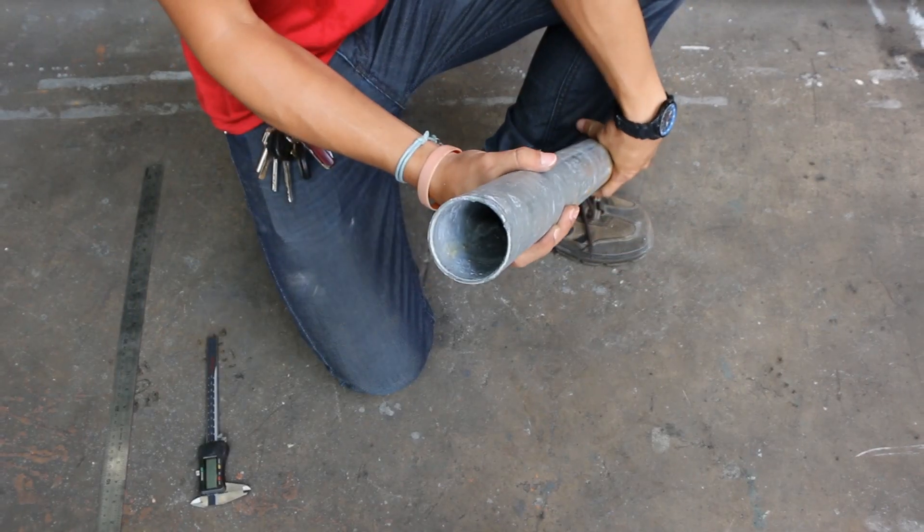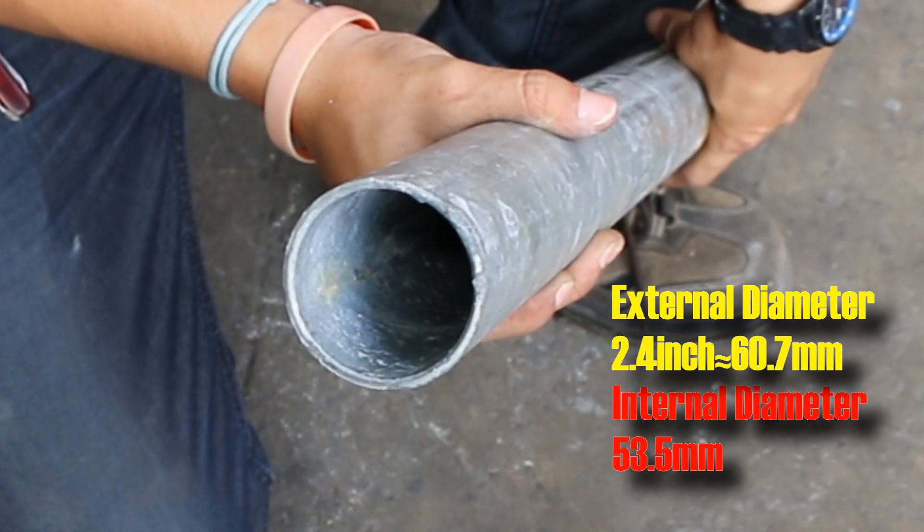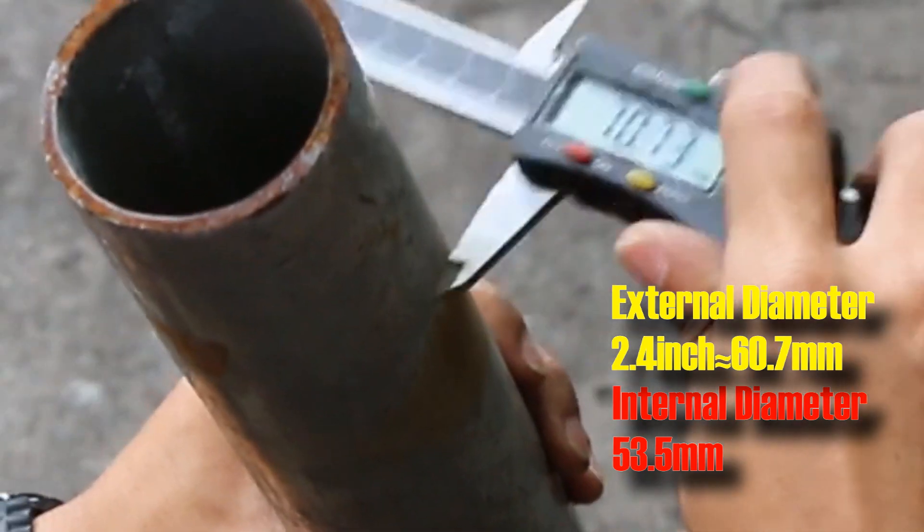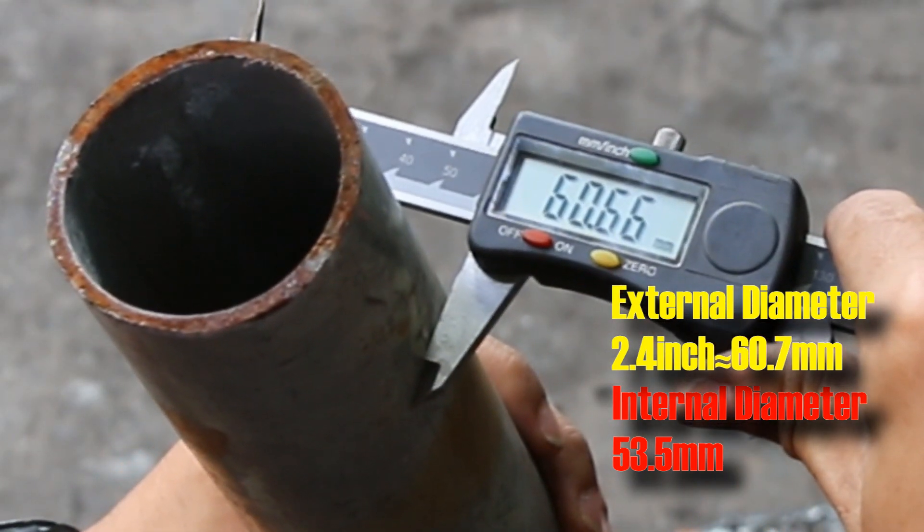Firstly, I have found a steel pipe which has an external diameter of about 2.4 inches and an internal diameter of 53.5mm.